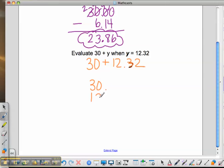So, here we will line up the decimal points so that all the place values are lined up. 0 plus 2, 2. 0 plus 3, 3. Decimal point.